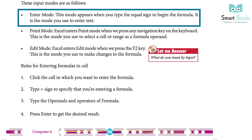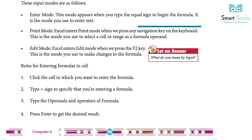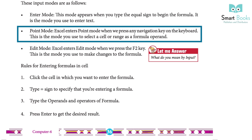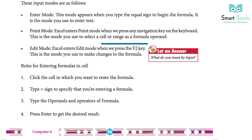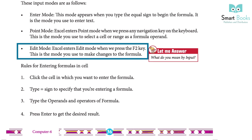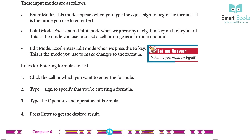Point mode: Excel enters point mode when we press any navigation key on the keyboard. This is the mode used to select a cell or a range as a formula operand. Edit mode: Excel enters edit mode when we press the F2 key. This is the mode used to make changes to the formula.